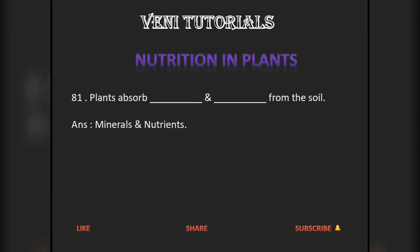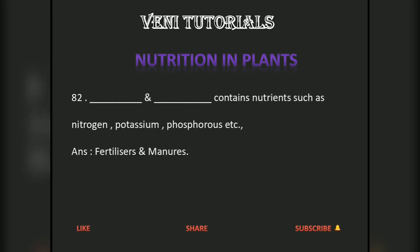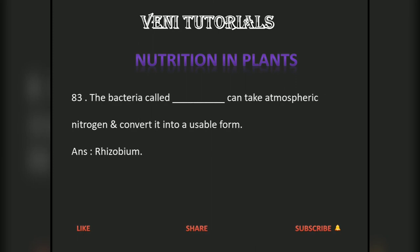Plants absorb minerals and nutrients from the soil. Fertilizers and manure contain nutrients such as nitrogen, potassium, phosphorus, etc. The bacteria called Rhizobium can take atmospheric nitrogen and convert it into a usable form.